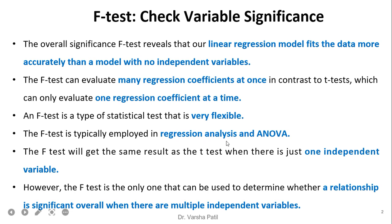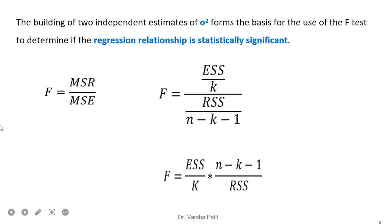F-test is typically employed in regression analysis and ANOVA. The F-test will get the same result as a t-test when there is just one independent variable. However, the F-test is the only one that can be used to determine whether a relationship is significant overall when there are multiple independent variables. The building of two independent estimates of sigma square forms the basis for use of the F-test.